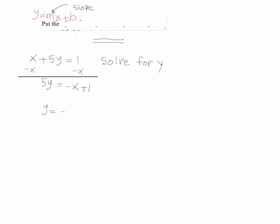So, 1 over 5x. Right. If I divide each term by 5, that's what I would get. Plus 1 over 5.